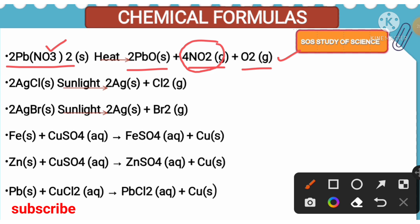Silver chloride, when it is kept under sunlight, we get silver and chlorine — an example for photolytic decomposition reaction. Similarly, silver bromide, when we keep it under sunlight, we get silver and bromine. This is also an example for the photolytic decomposition reaction.